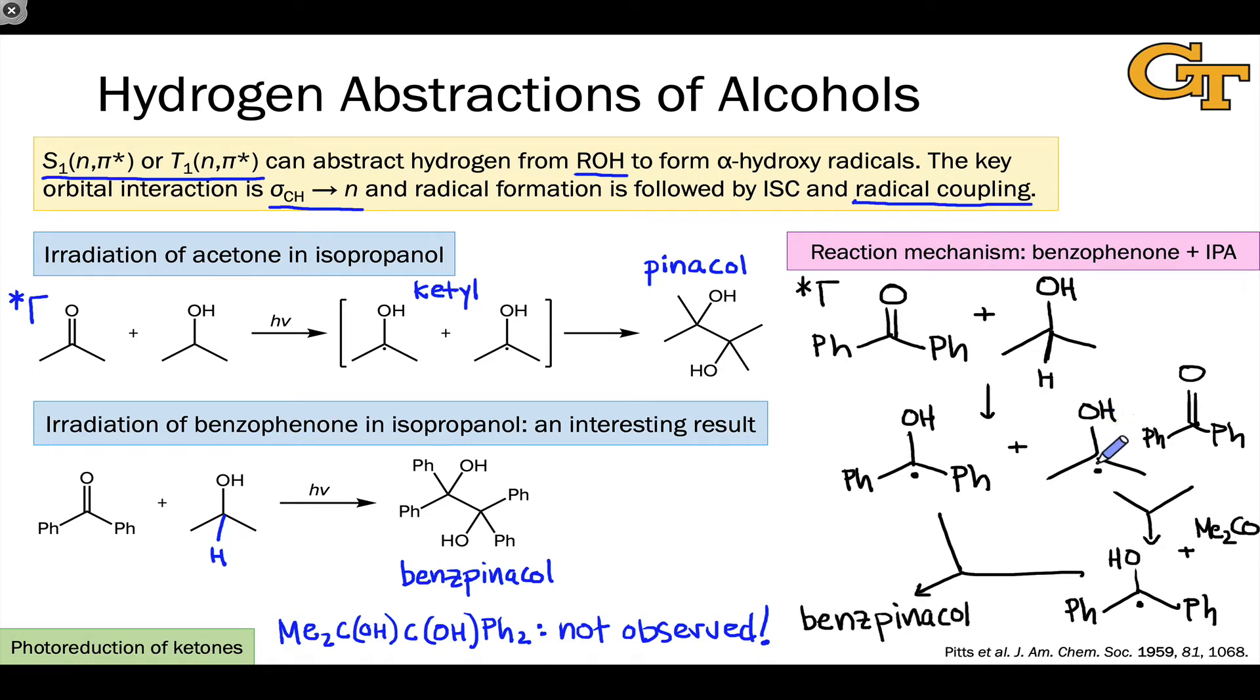This reactivity hinges on this isopropyl ketyl radical engaging with ground state benzophenone to form a more stable radical derived from benzophenone. The key general idea here is that radical stability can drive processes, secondary processes that lead to sometimes unexpected radicals.